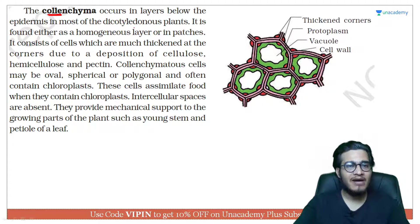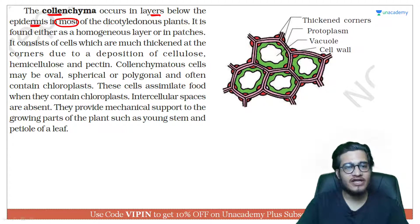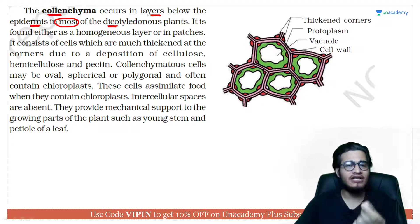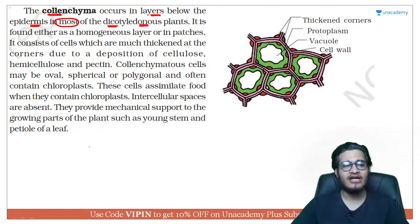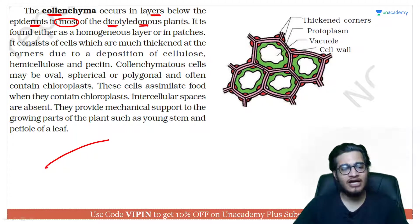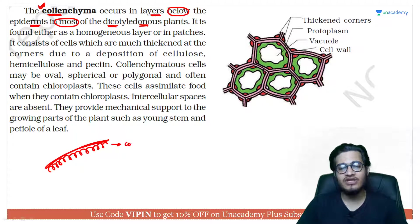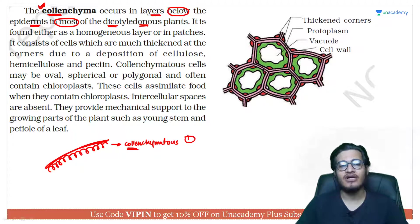Colenchyma occurs in a layer below the epidermis in most dicot plants. Understand this carefully — it tells you a character of dicot plants. When you study the anatomy of a dicot plant, you will learn that if this is the epidermis of a dicot plant, the layer below it is the hypodermis. This hypodermis is made of colenchyma — meaning in dicots, the hypodermis is collenchymatous. So you directly get a hint and remember one point about dicots.